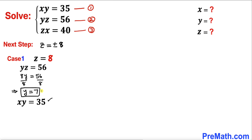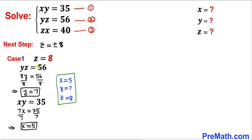Now let's focus on equation 1. Plugging in y equals 7, we get 7x equals 35. Dividing both sides by 7 to isolate x, our x value turns out to be 5. So for case 1, x equals 5, y equals 7, and z equals 8.